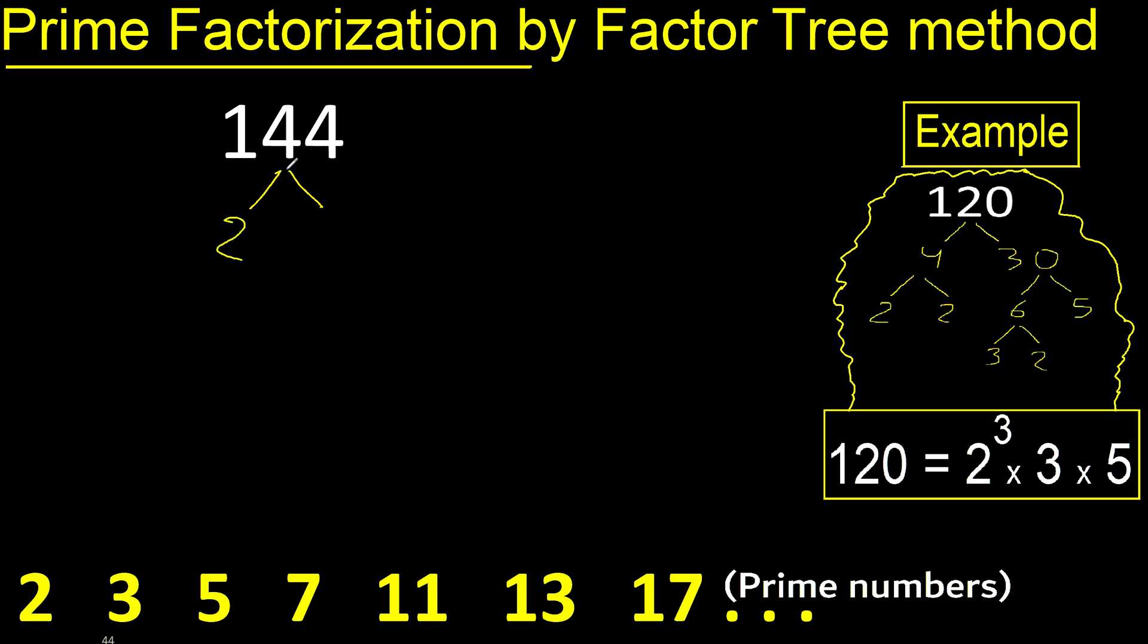Therefore, here 2. 144 divided by 2 is 72. 2 multiplied by 72 is 144. 2 is a prime number. Therefore, here finish it.